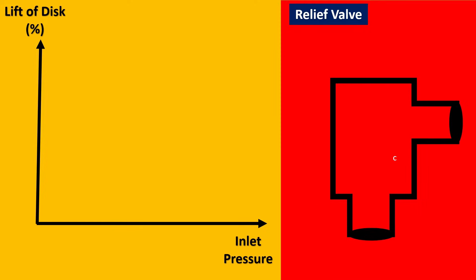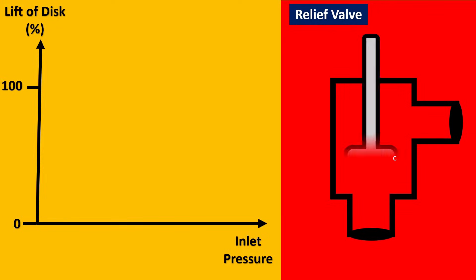Imagine that we put an actual example with inlet pressure on the x-axis and the lift percentage of the disc on the y-axis, and here's your relief valve. We keep it from 0 to 100% and we have your relief valve disc put into place.